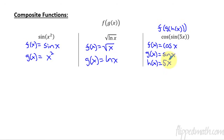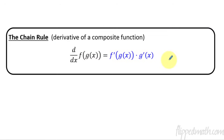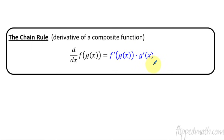That's the chain rule — it's how we take a derivative of a composite function. We start with the outside one, the f function, take its derivative and leave the inside alone, and then you multiply by the derivative of what's inside that function, the composite inside it. Write this down, and let me show you with some examples how this works.